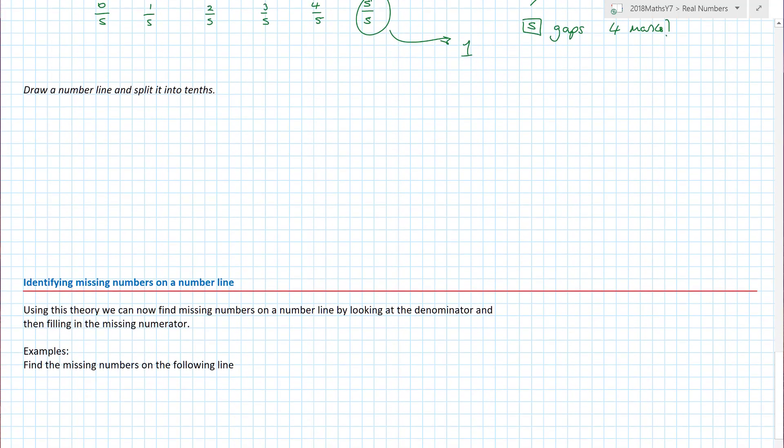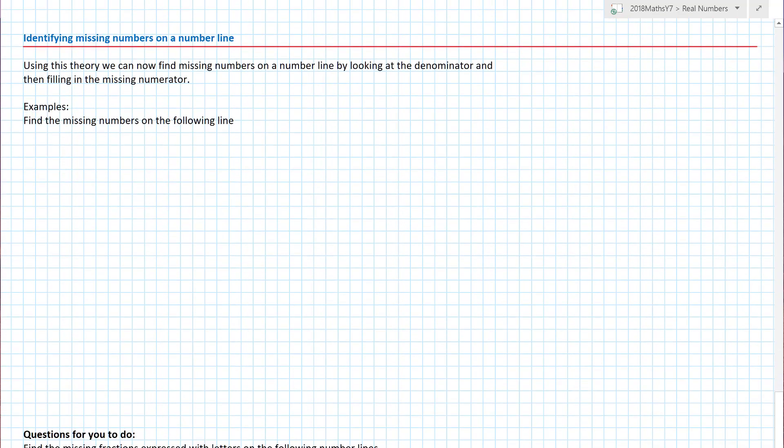So last example, draw another line and split it into tenths. Well, no, half my number line's just gone missing. So there's zero and there's the number one. We want tenths, which means we've got to have 10 gaps or nine little marks. So one, two, three, four, five, six, seven, eight, nine. Right? They're not all equidistant, but it's close. And then you just literally count. One tenth, two tenths, three tenths, four tenths, five tenths, six tenths, seven tenths, eight tenths, nine tenths. If I wanted to, ten tenths, and zero tenths. And that literally is all there is. But what about identifying missing numbers on a number line?